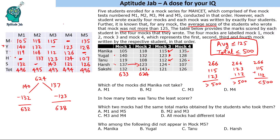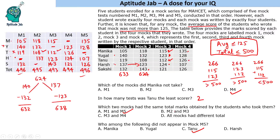Answering the questions: Which mock did Manika not take? — Manika did not take M4. In how many tests was Tanu the least scorer? — In M2 and M3 she was the least scorer, so in 2 mocks. Which two mocks had the same total marks? — M1 and M5 have the same total marks. Who did not appear in Mock M5? — Tanu did not appear in M5.